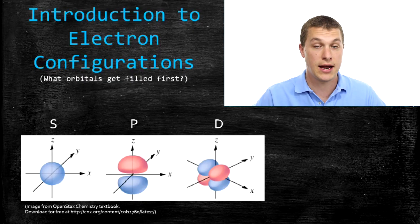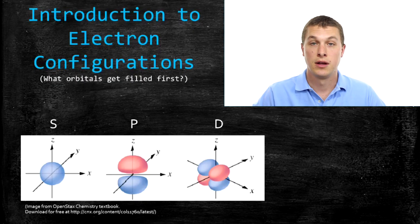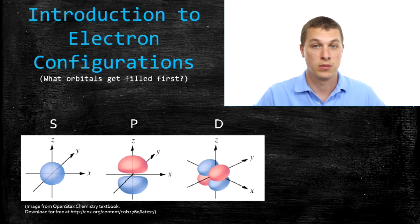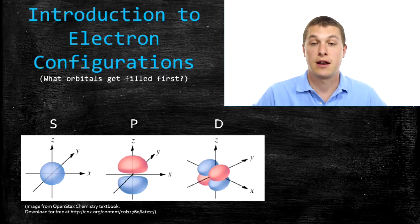We have the s orbital, which is just a sphere, and the p orbital, which is a set of barbells, or looks kind of like a set of barbells, and the d orbital, which looks kind of like a clover.